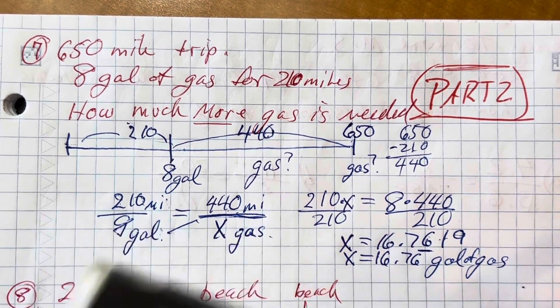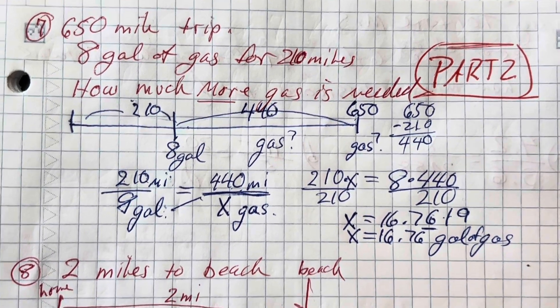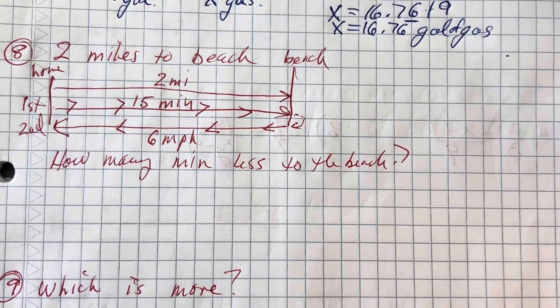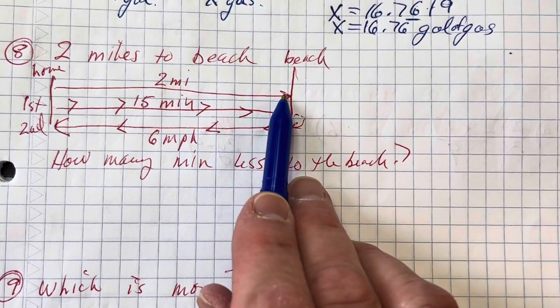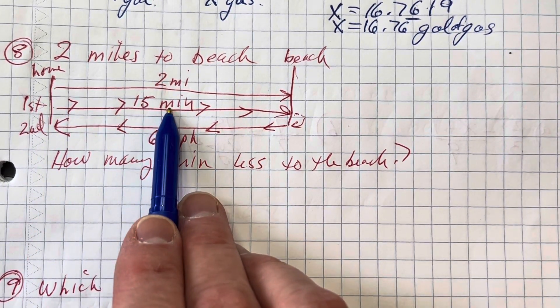Okay, there is number 7. Now, for number 8, I already kind of drew a model for this. So here's number 8. 2 miles to the beach. So we know from home to the beach there's 2 miles. We know the first trip, it took 15 minutes.